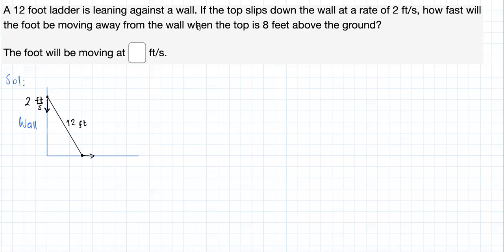A 12-foot ladder is leaning against a wall. If the top slips down the wall at the rate of 2 feet per second, how fast will the foot be moving away from the wall when the top is 8 feet above the ground?